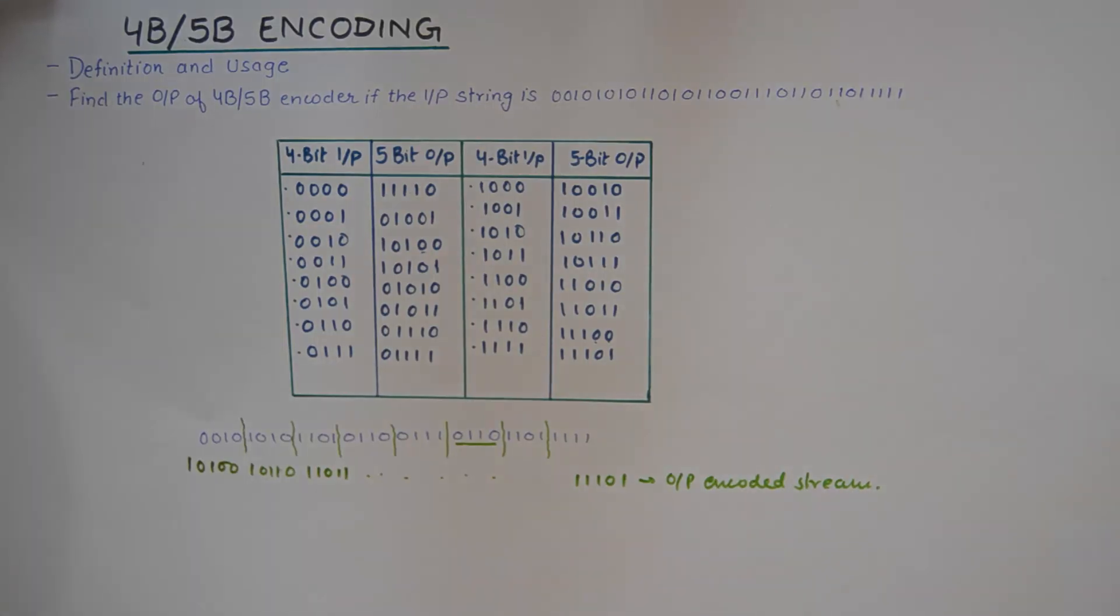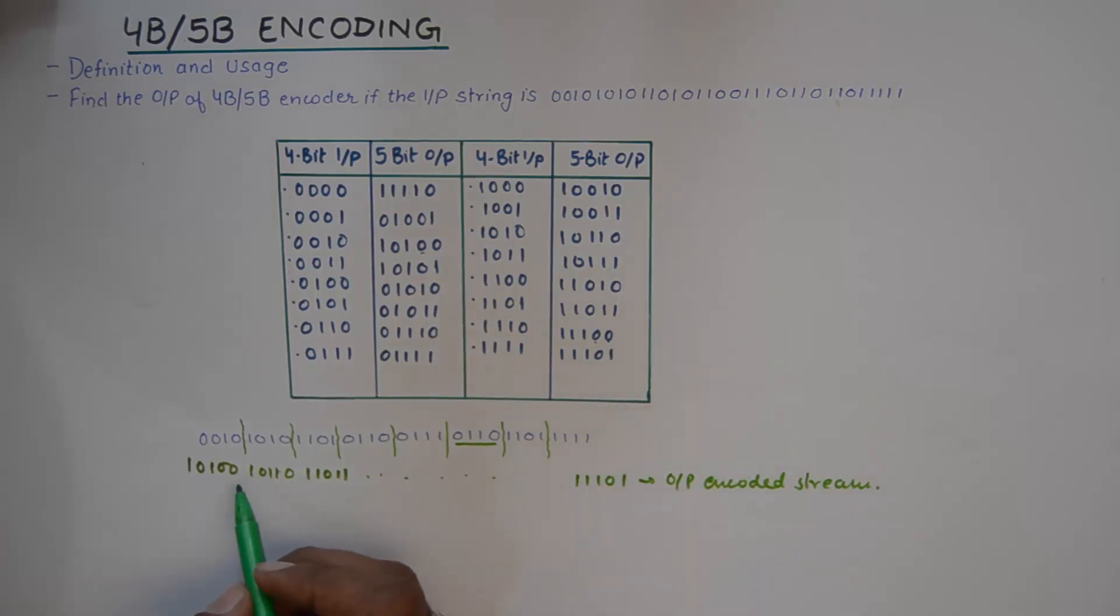So that is how 4b5b encoding works. Now, I was talking about combination of two codes.